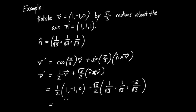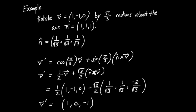So now all I have to do is add the components together to find my new vector. Looking at the first component: 1/2 × 1 = 1/2, plus root 3 over 2 × 1/√3 — the root 3's cancel — giving 1/2 + 1/2 = 1. My new y coordinate is −1/2 + 1/2 = 0. And finally, 1/2 × 0 = 0, then root 3 over 2 times −2/√3 gives −1. So I find that V prime is (1, 0, −1).